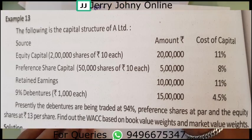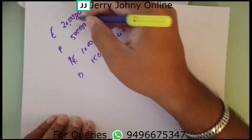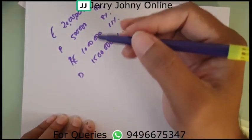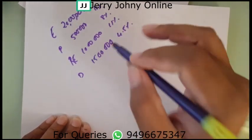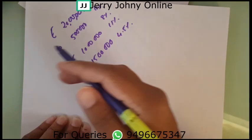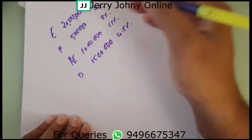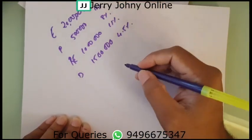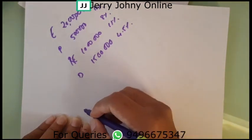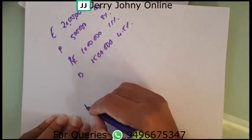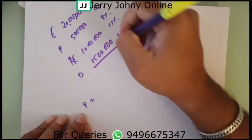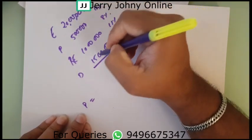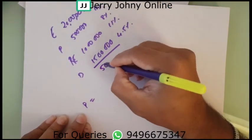Equity share 20 lakhs, preference shares 5 lakhs, retained earnings 10 lakhs, debentures 15 lakhs. This is the basic item — it is the proportion. You have to find the proportion and find out the weights also. The total is 20 lakhs plus 5 lakhs plus 10 lakhs plus 15 lakhs, which comes to a total of 50 lakhs.